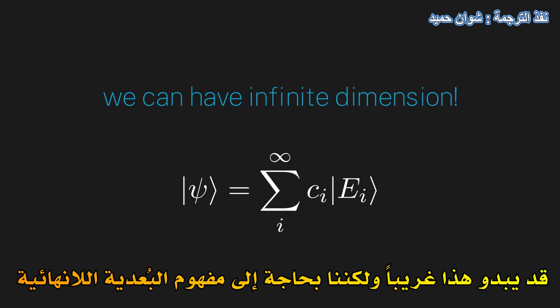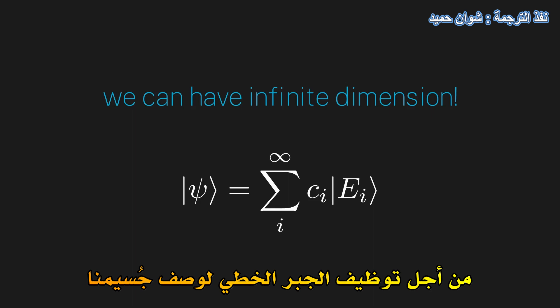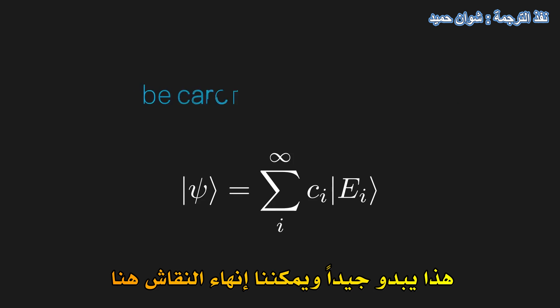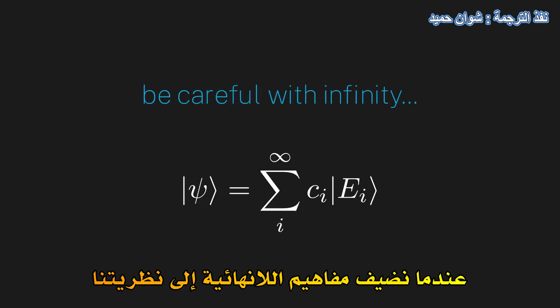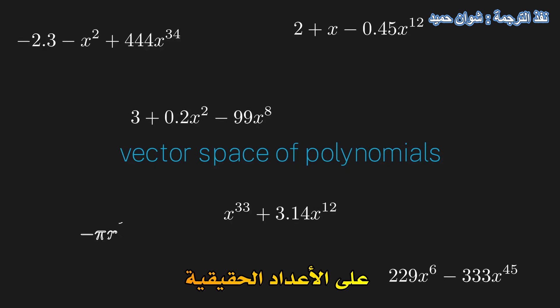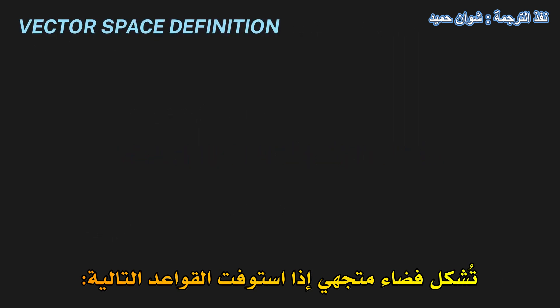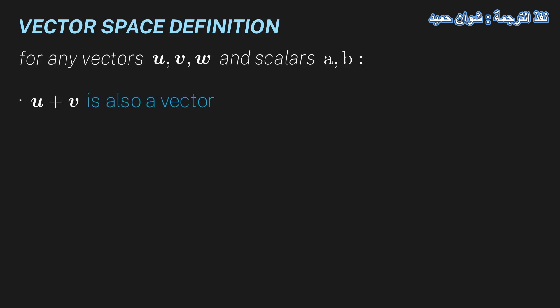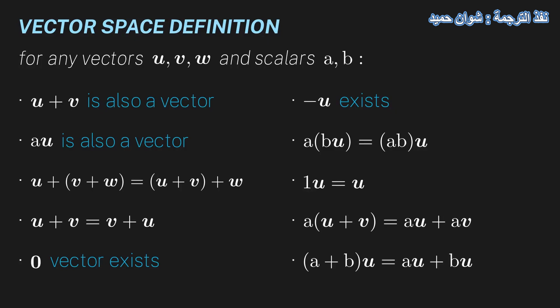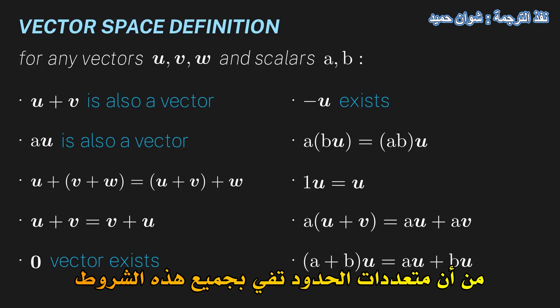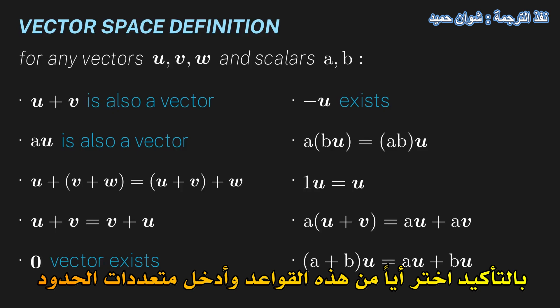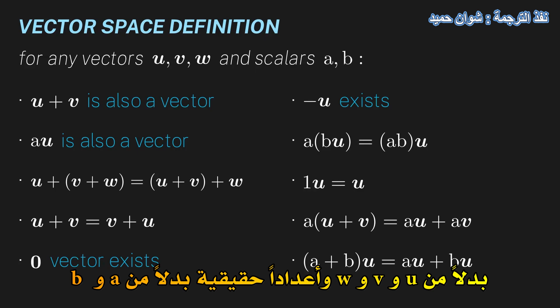This may seem strange, but we need a notion of infinite dimension in order to use linear algebra to describe our particle. This seems fine, but we always need to be very careful when we add infinities into our theory. To show us what can go wrong when we add infinities into linear algebra, let us look at a specific example: the vector space of polynomials over the real numbers. It's fairly straightforward to check that polynomials satisfy all of the vector space rules. Pick any of these rules and plug in polynomials for u, v, and w, and real numbers for a and b — you'll see that it holds true.